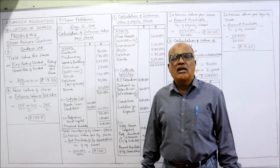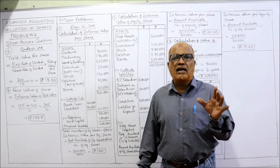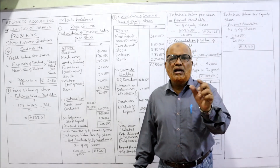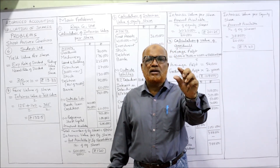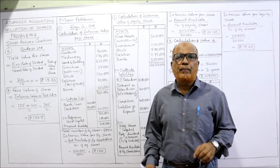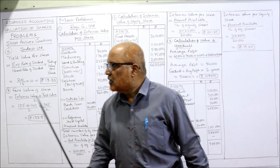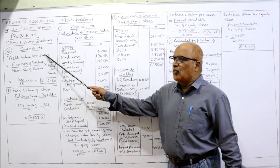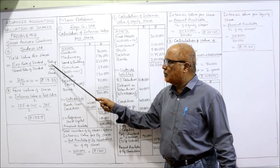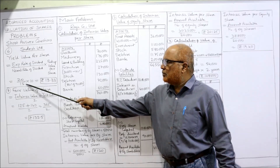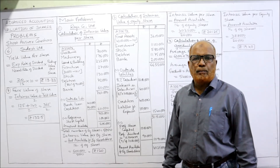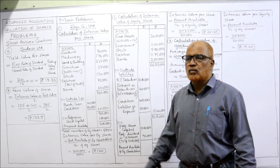So everything is given. We can easily calculate the yield value of share using the formula: Yield Value = (Expected Rate of Dividend / Normal Rate of Dividend) × Paid Up Value per Share. So here, yield value per share = (20 / 15) × 10 = ₹13.33. This is the yield value per share.